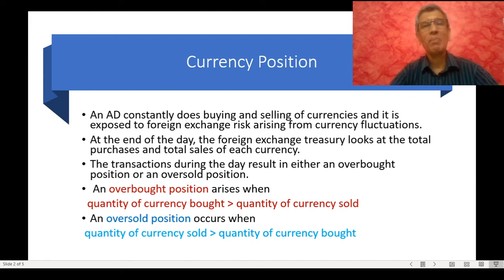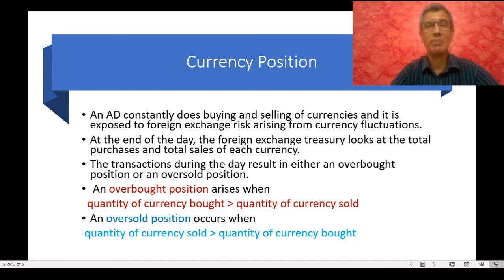As a result of the constant buying and selling of foreign currency done by the authorized dealer, it is exposed to foreign currency risk because an open position is developed in that currency by virtue of such buying and selling. This exposes the authorized dealer to risk. Such buying and selling creates either an overbought position or an oversold position.